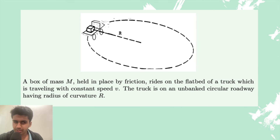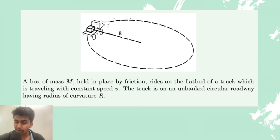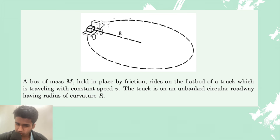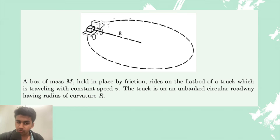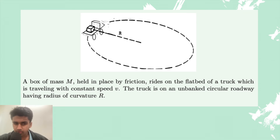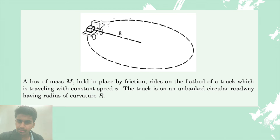Now let's practice with some free response questions. A box of mass m, held in place by friction, rides on a flatbed of a truck which is traveling with constant speed v. This constant speed should already remind us of uniform circular motion. The truck is on an unbanked circular roadway having radius of curvature r. This problem basically has a truck and a box on top, both moving in a circle. The box is on the truck and is not sliding off because friction is preventing it from doing so.